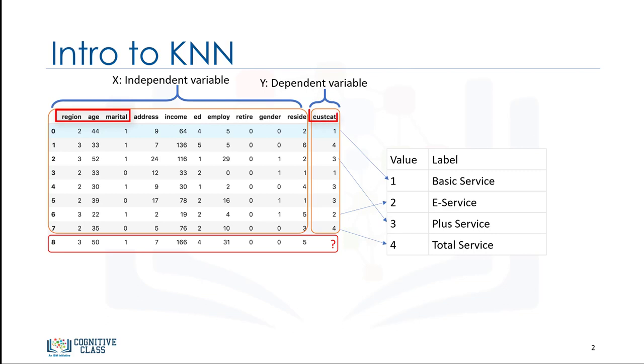The target field, called CustCat, has four possible values that correspond to the four customer groups, as follows: Basic service, e-service, plus service, and total service.